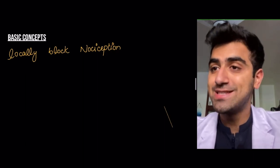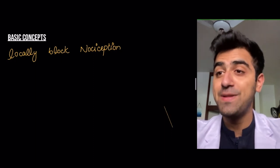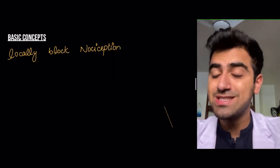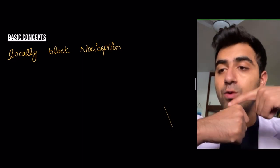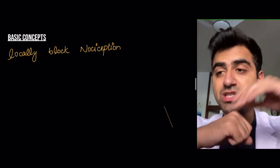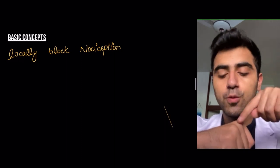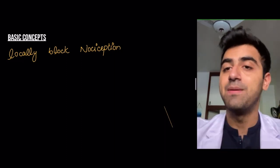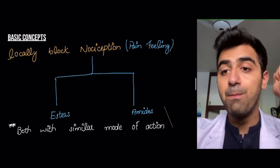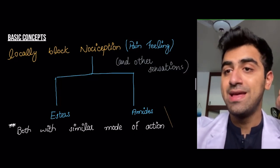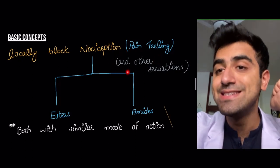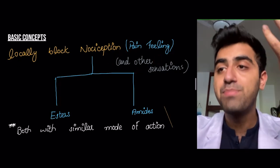What do local anesthetics do? They locally block nociception. Anesthesia means the loss of all sensations — nociception means pain. So if you're having surgery on your hand, you want to block the sensation of pain in that particular area. Local anesthetics are divided into esters and amides, both bases, both with a similar mode of action. It's important to note that they don't just remove pain — they also remove other sensations such as touch, pressure, and light touch.